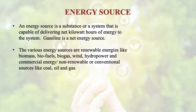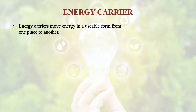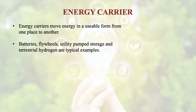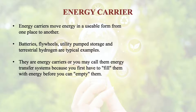These are known as sources because from here we fetch out the energy to convert it into the useful form. Now come the carriers. What are the energy carriers? The carriers are the substances which help to move energy in a usable form from one place to another. Batteries, flywheels, utility pumps, storage, and terrestrial hydrogen are typical examples of energy carriers. They store the energy and give it to us when we need them — they are energy transport systems. First you have to fill them with energy, then they will store it and you can utilize it whenever you need.